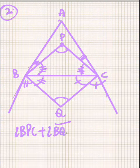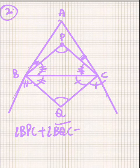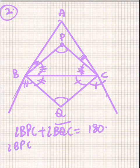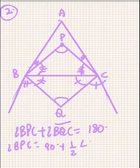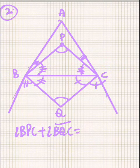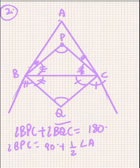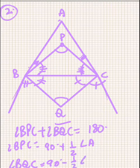We have to prove that angle BPC plus angle BQC is equal to 180 degrees. It's very simple because we can directly use the theorem. Angle BPC will be equal to 90 degrees plus half of angle A — this we have already done in the last exercise many times. And then angle BQC will be equal to 90 degrees minus half of angle A.